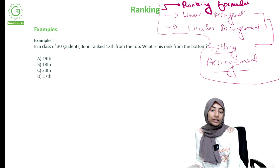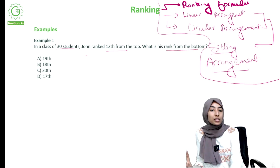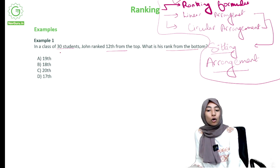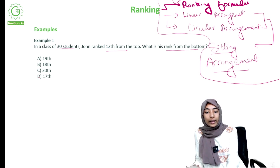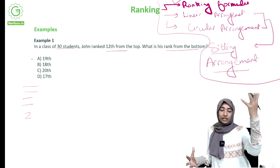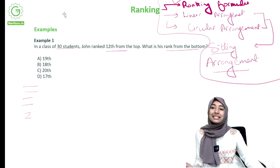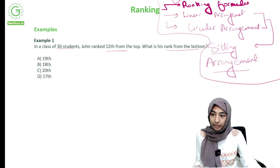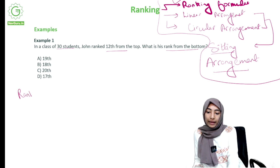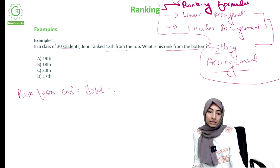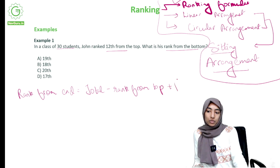Okay, now we'll start with the examples. In a class of 30 students, John ranked 12th from the top — what is his rank from the bottom? This is the first formula. You can draw 30 lines but it's much easier to use the formula. The formula is: rank from end = total minus rank from top, plus one.